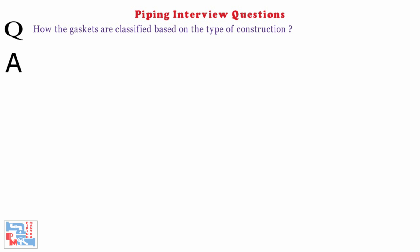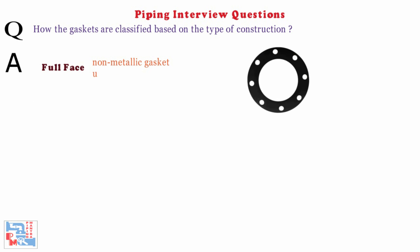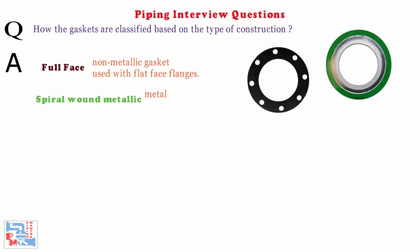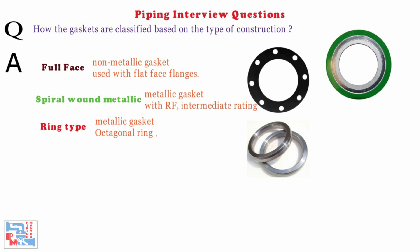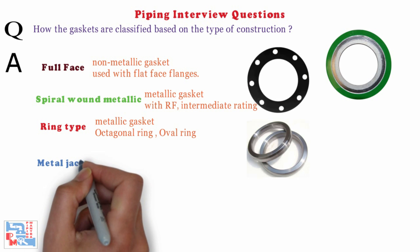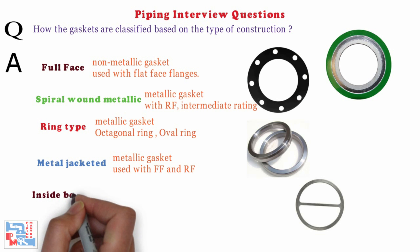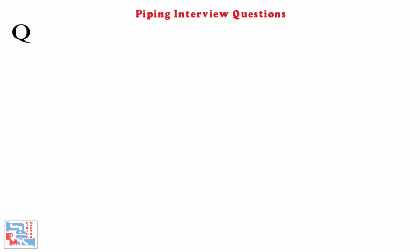Next: how are gaskets classified based on the type of construction? Based on type of construction, gaskets are classified as: full face — a non-metallic gasket used with flat face flanges; spiral wound — a metallic gasket used with raised face at intermediate ratings; ring type — a metallic gasket with two types, octagonal ring and oval ring; and metal jacketed — a metallic gasket used with flat face and raised face, sitting inside the bolt circle.